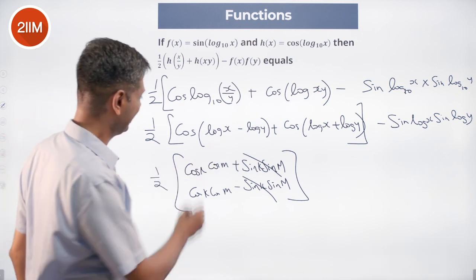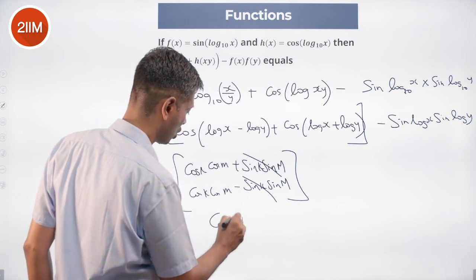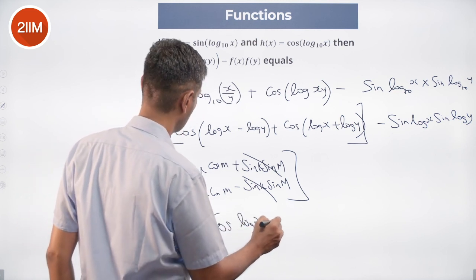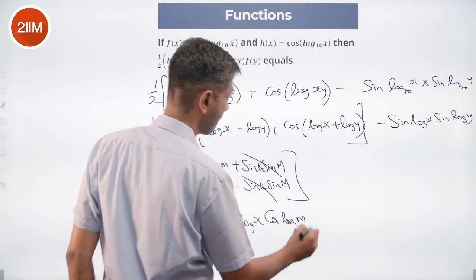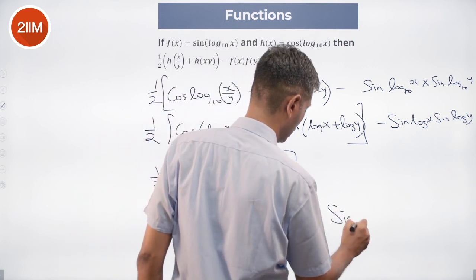So finally I simplify this: I'll have cos(log X) into cos(log M) minus sin(log X) into sin(log Y).